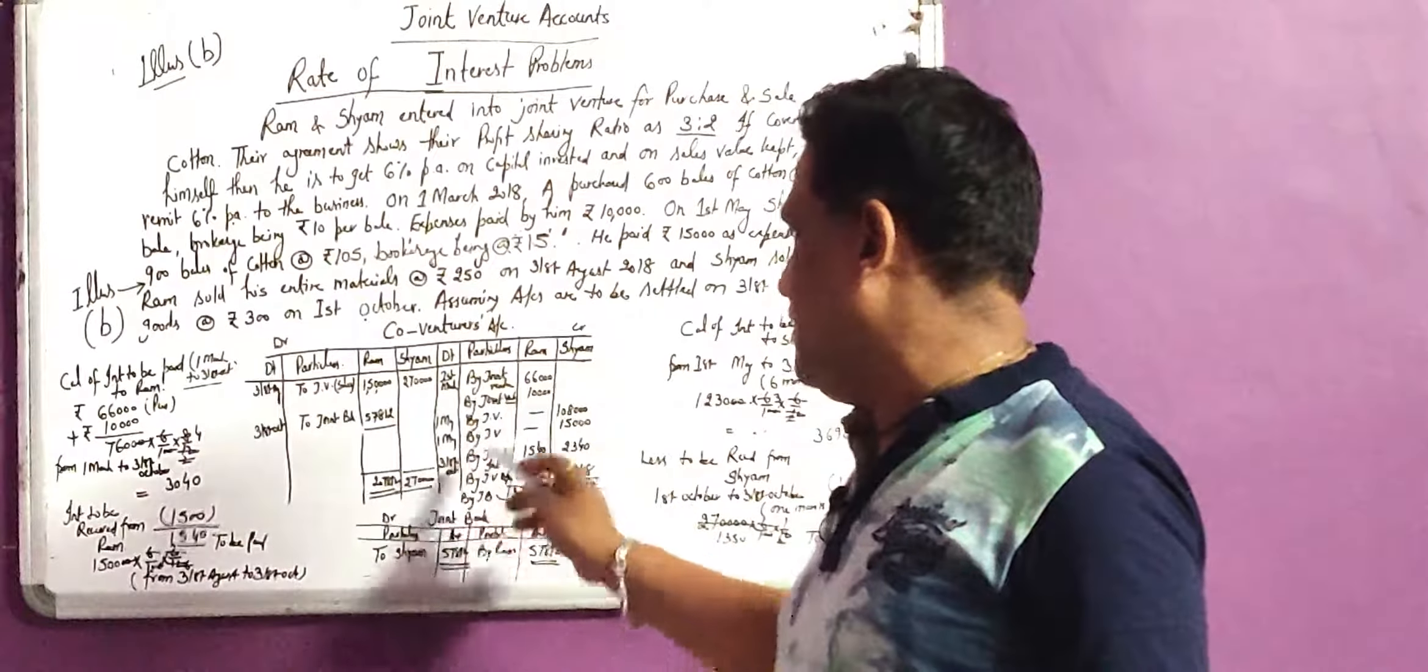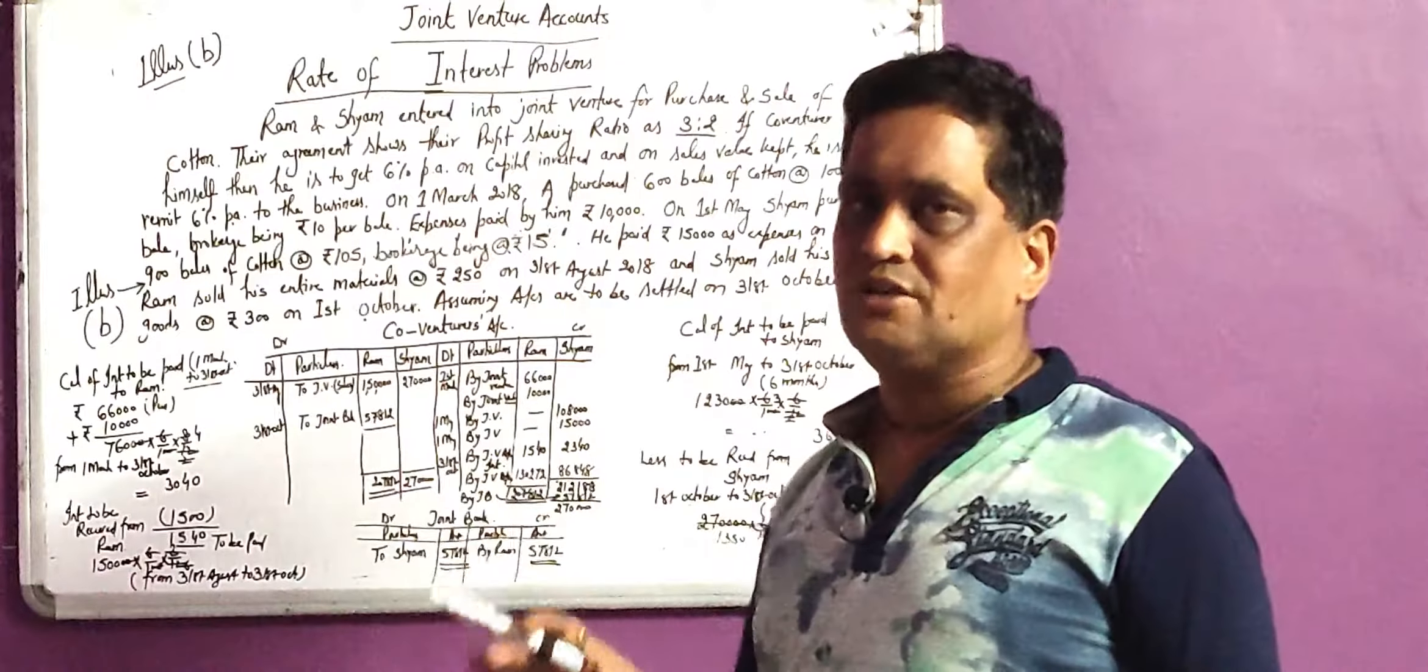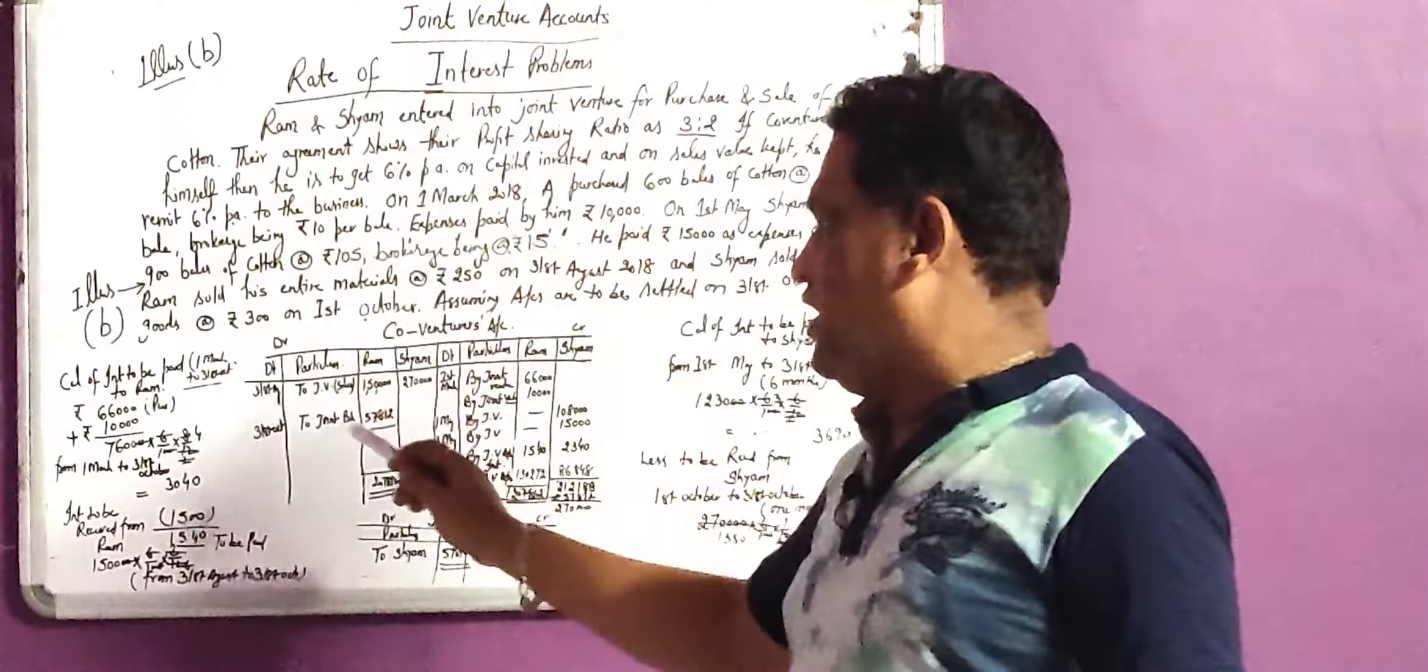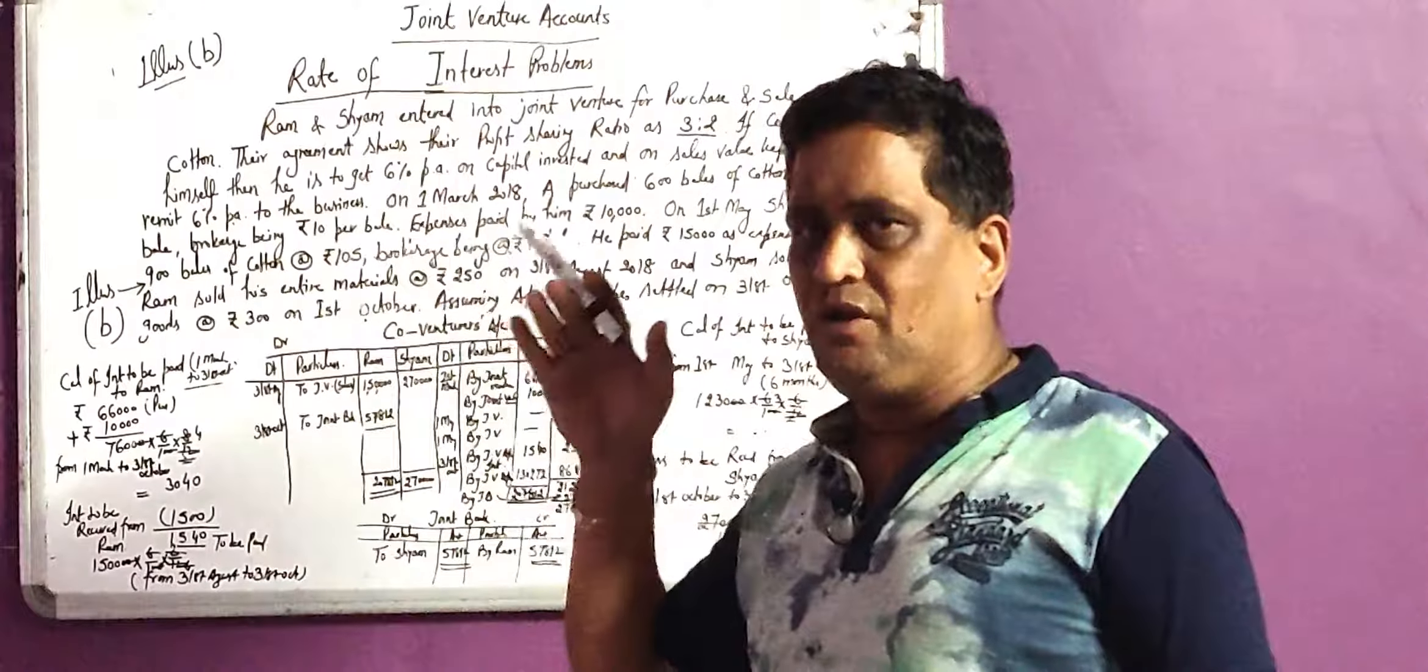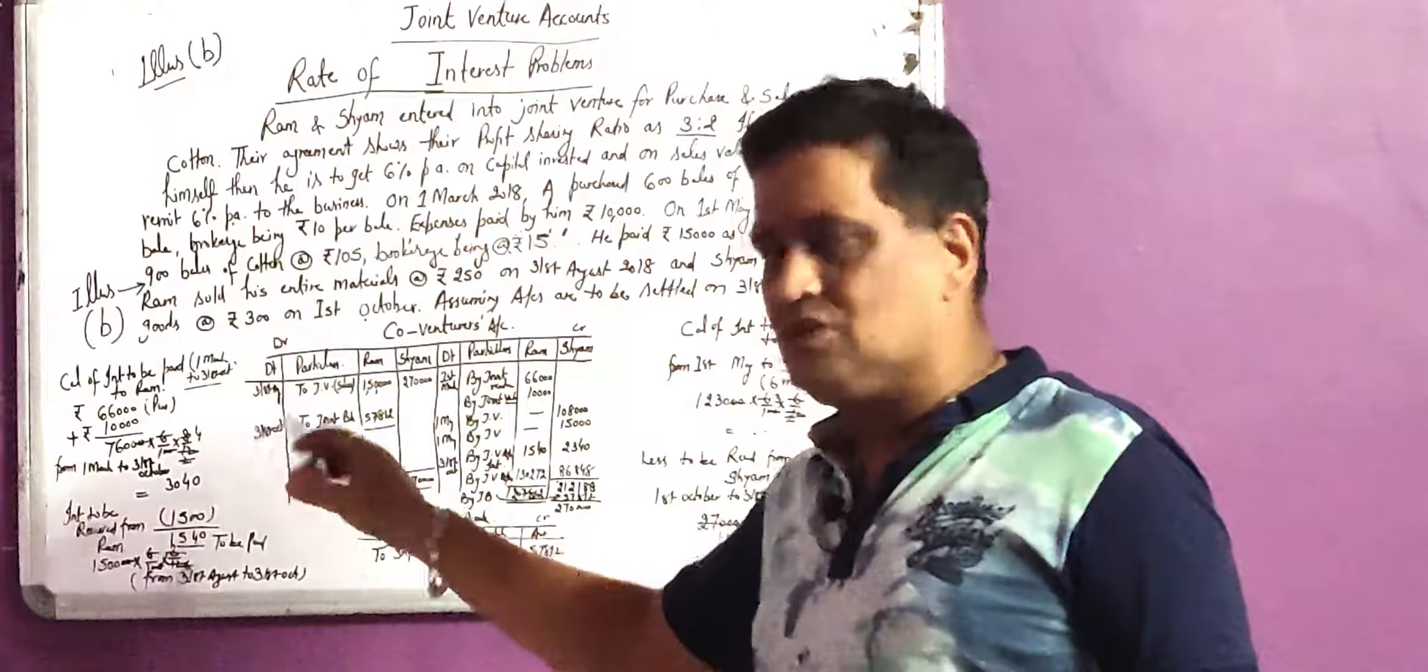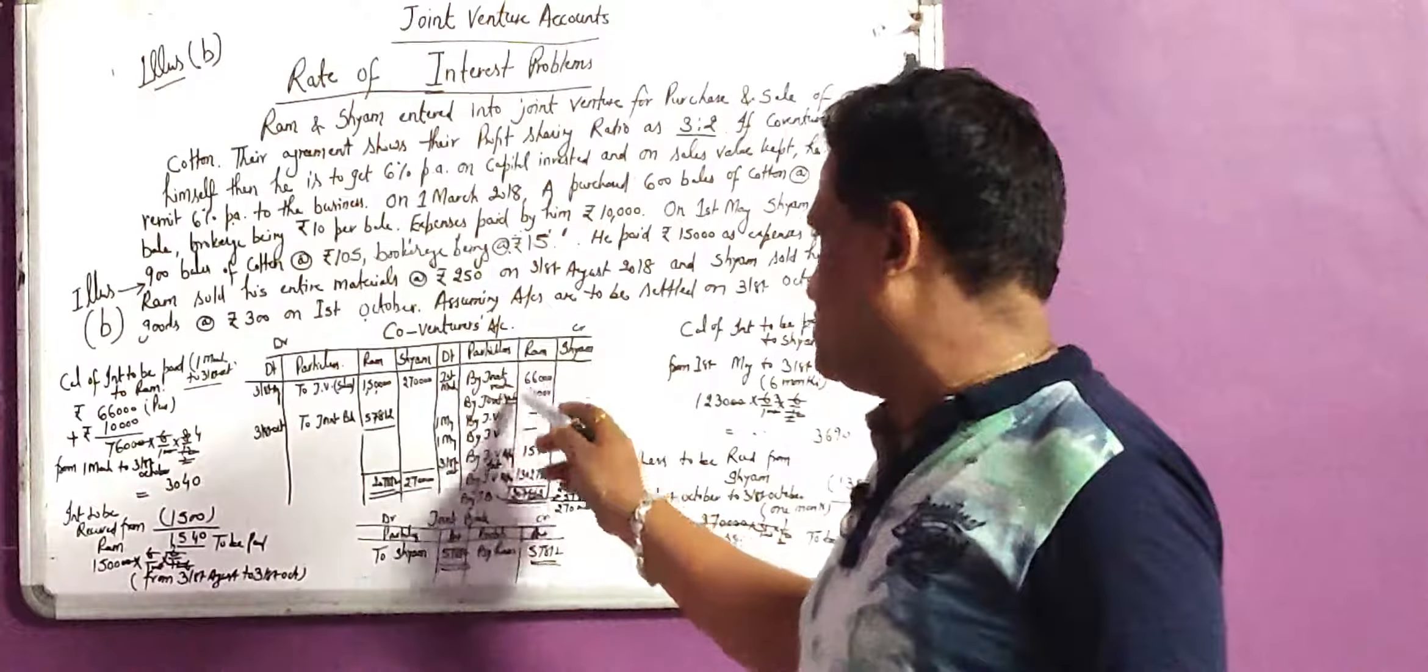Treatment by joint venture account that will be credited to Ram 10,000. It means total amount has been contributed by Ram on 1st March 2018 in our illustration, that was 76,000. And when we made a joint venture account, we made to Ram, we made it debit. We made it by joint venture 76,000.